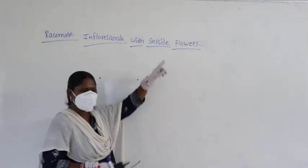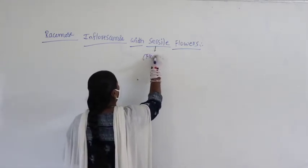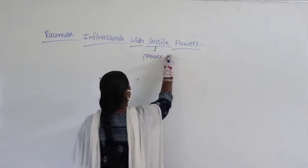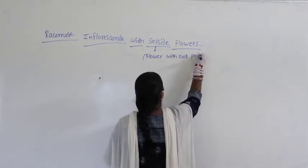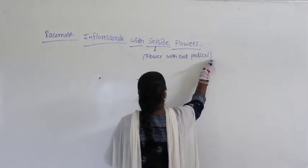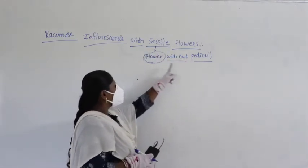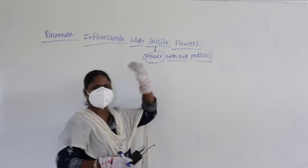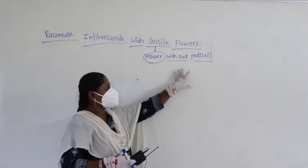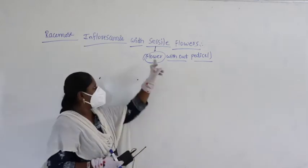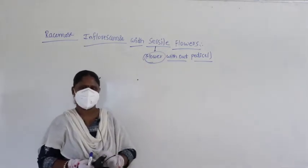What is the meaning of sessile here? Sessile means a flower without pedicle — a flower without pedicle is called a sessile flower. A flower with pedicle is called a pedicillate flower; a flower without pedicle is referred to as a sessile flower.